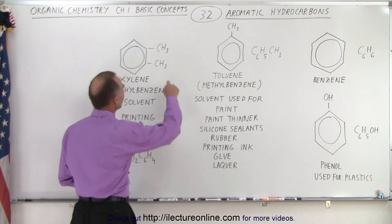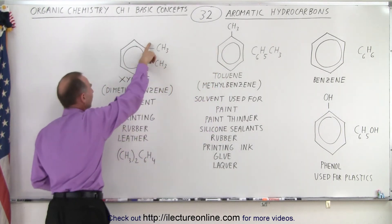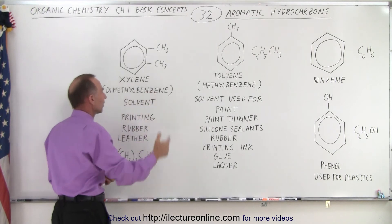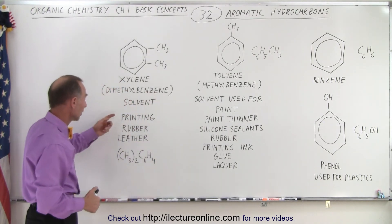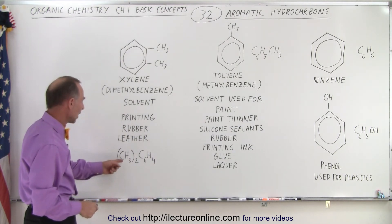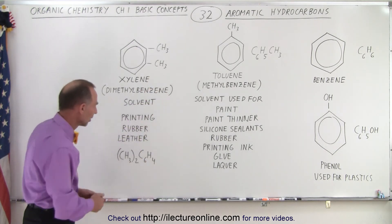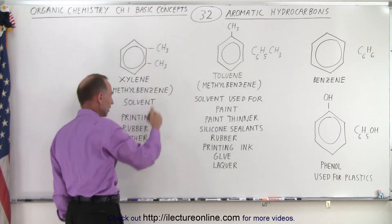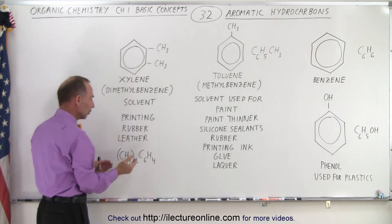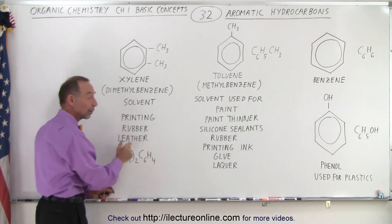Instead of having one methyl group, if we have two methyl groups, now we call it xylene. So from toluene with a single methyl group, now with two methyl groups we call it xylene. Instead of calling it methylbenzene, since there are two of them, we call it dimethylbenzene. It's also a solvent, used for printing, for rubber, and for the production of leather to treat it in order to make it into a leather product. Notice we have the CH3 — there are two of them — connected to a C6H4. So all of them have a C6, but notice that the more groups you attach instead of hydrogen, the number of hydrogens will decrease.